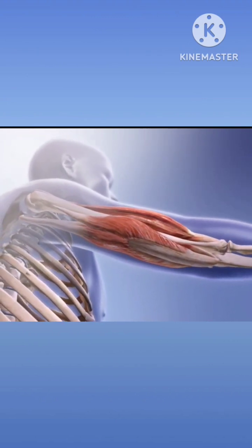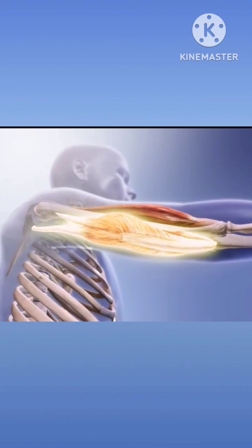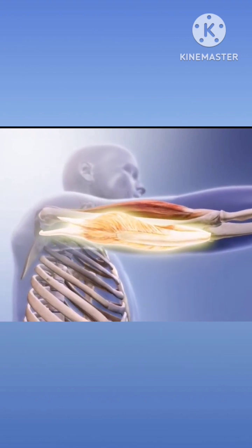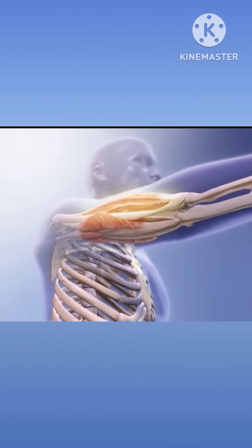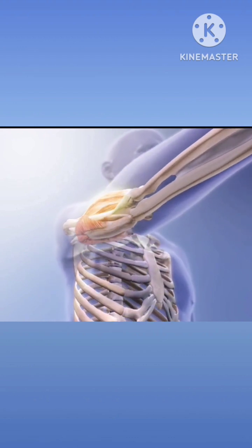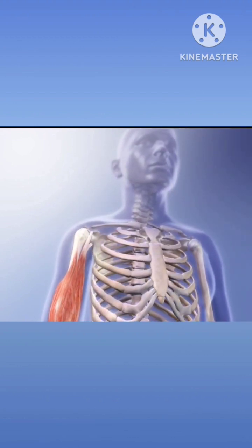When the action of elbow extension occurs, the triceps brachii is now the agonist and contracts to extend the limb, while the biceps brachii muscle relaxes and becomes the antagonist.